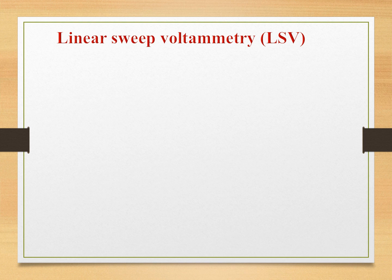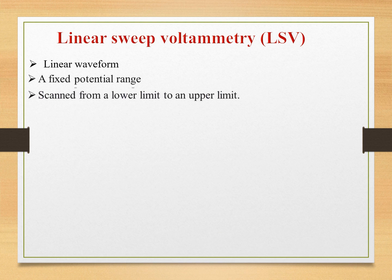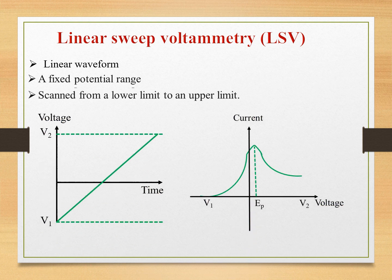Next, we can go to linear sweep voltammetry. Here, the voltage is swept linearly between two limits, typically the oxidation and reduction potential. In LSV, the range of potential is fixed and the scanning starts from the lower limit of voltage V1 to an upper limit of V2. The scanning starts from V1 to V2 in a linear manner.